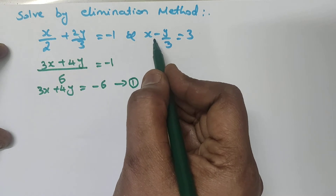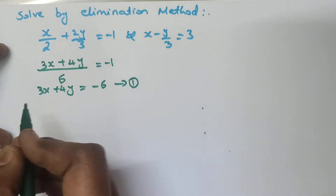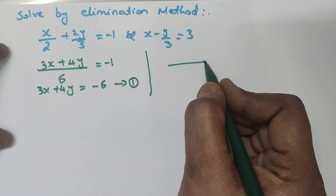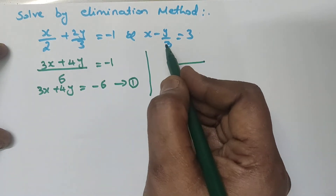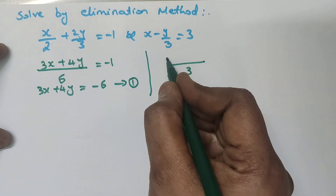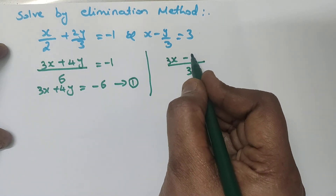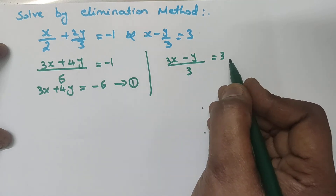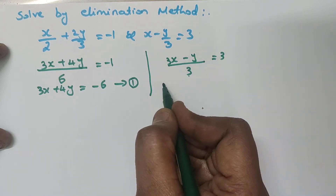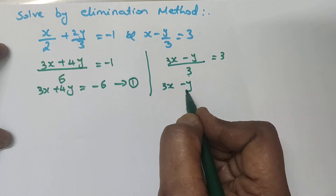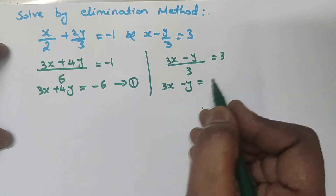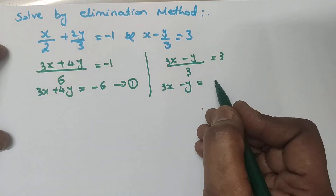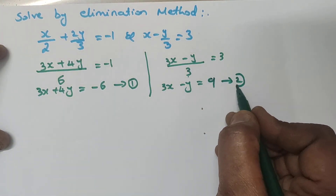Now take the second equation. The common denominator is 3. So 3 into x gives 3x, minus y, equals 3 multiplied to the other side. Therefore 3x minus y equals 9. This is the second equation.